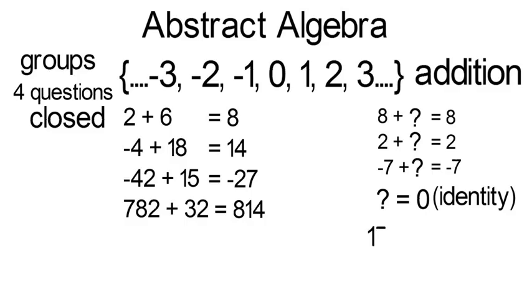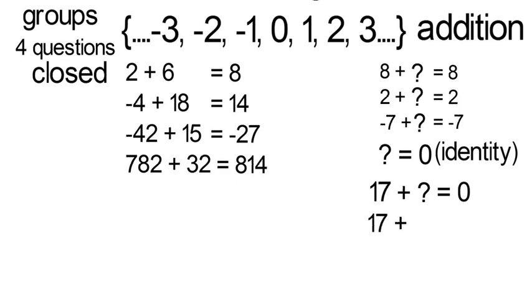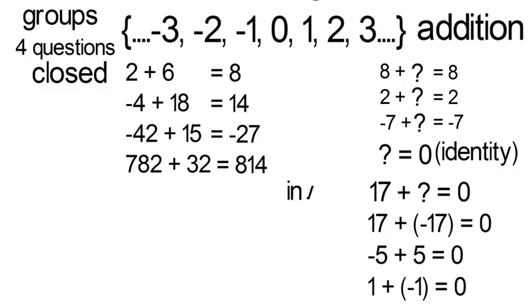Next, if I have some integer, again, whatever I want, is there always some other integer that I can add where I get the identity element from above or zero? Again, this is true. There's always just the negative of whatever you have that you add to get zero. And everything you see is an integer and therefore it's in our set. This means there's an inverse in our set for every value.